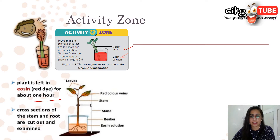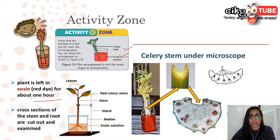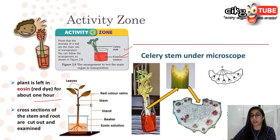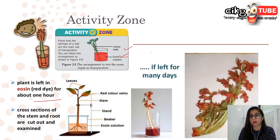Leave the celery for 24 hours and then examine it. You can see that water is moving up the xylem — the eosin dye will color the xylem red, because water is transported from the roots to the leaves. When you cut or examine the leaf after many days, the leaf turns red, showing that colored water moved from the roots through the stem to the leaf.